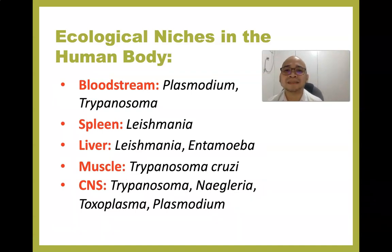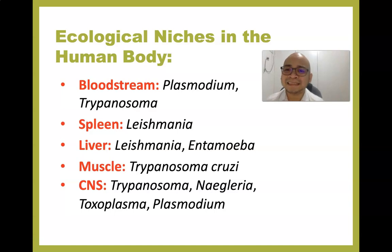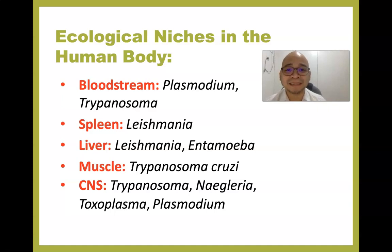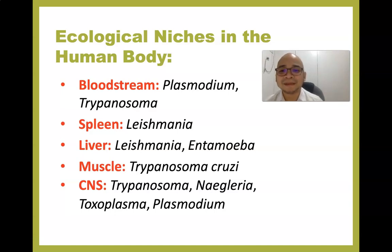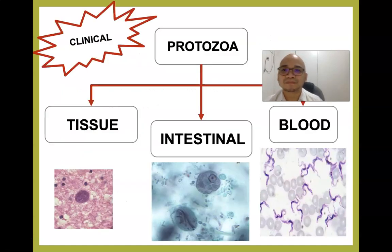Some parasites inhabit the bloodstream, such as Plasmodium (which causes malaria) and Trypanosoma. Some species of Trypanosoma cause African sleeping sickness; T. cruzi causes Chagas disease. In the spleen and liver, Leishmania may be found; Entamoeba can also inhabit the liver extra-intestinally. T. cruzi may infect muscles. Trypanosoma may inhabit the CNS, causing African sleeping sickness. Naegleria is the causative agent of primary amoebic meningoencephalitis (PAM). Toxoplasma and Plasmodium also inhabit the CNS.